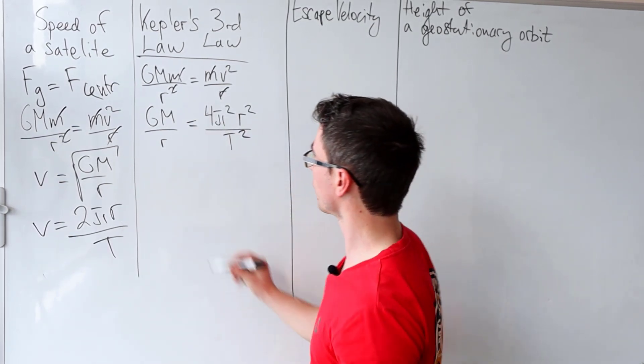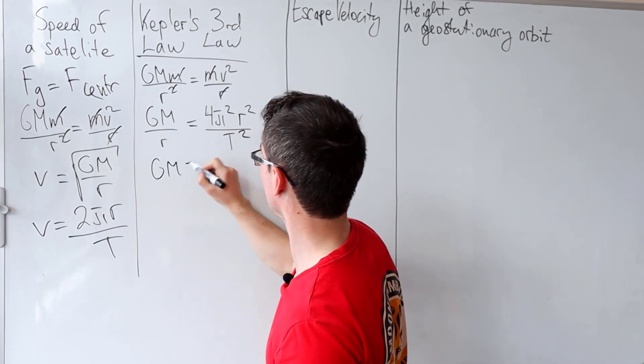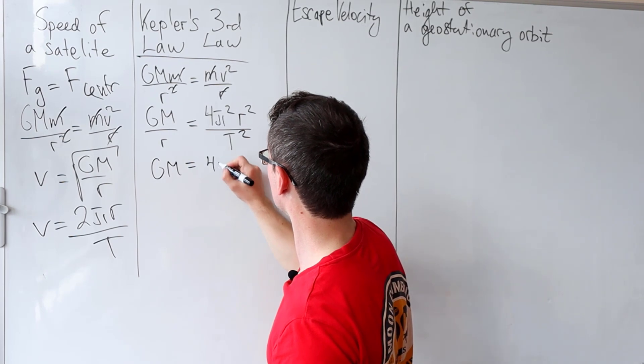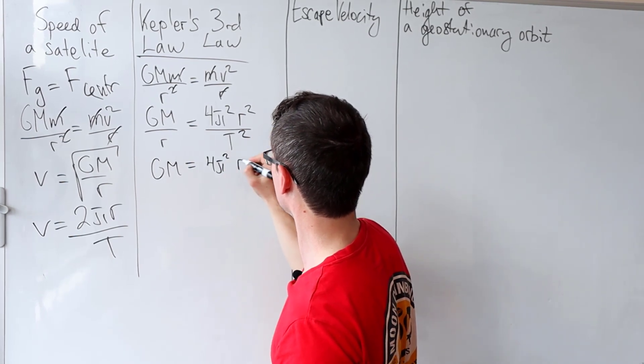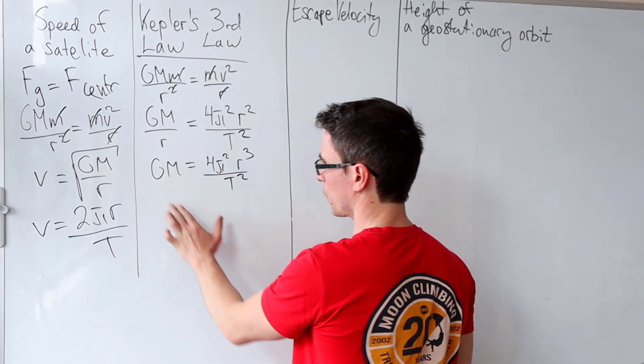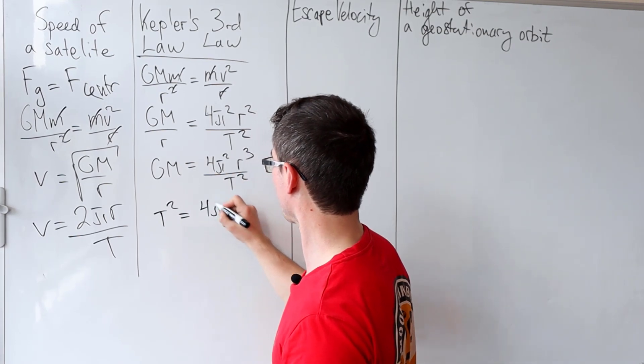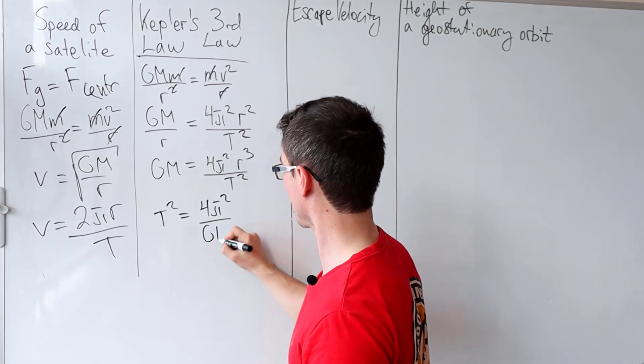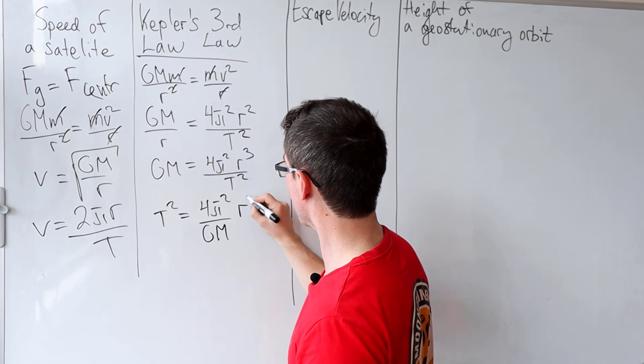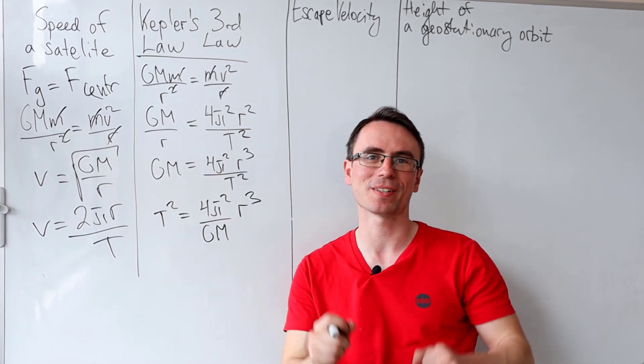Now we can rearrange this so I can bring this r over here. So what I'm left with is that GM is equal to 4π²r³/t². And my final step of the rearrangement is to just rearrange for t². So t² will be given by 4π²/GM multiplied by r³. And this here is Kepler's third law.